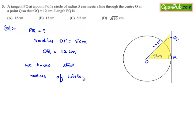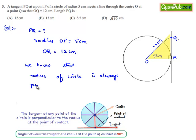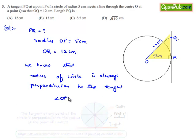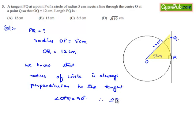We know that the radius of a circle is always perpendicular to the tangent, so angle OPQ is equal to 90 degrees.